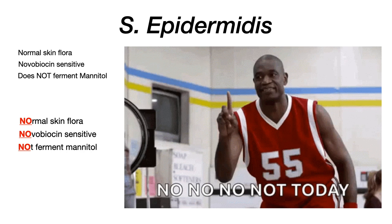The three no's stand for: Staph epidermidis is part of the normal skin flora; it's novobiocin sensitive; and it does not ferment mannitol. Because he's wagging his finger — and his finger has the epidermis on it — you want to associate Staph epidermidis with epidermis, with hands and fingers. This works for two reasons: first, this mnemonic; and second, it will make more sense later in the video.